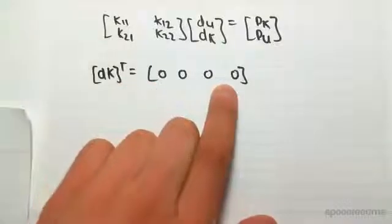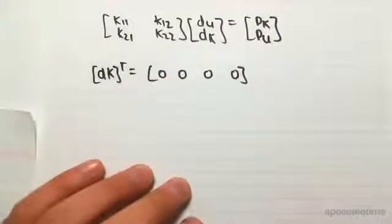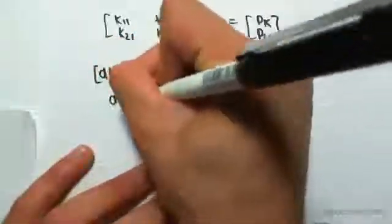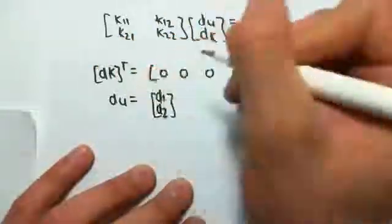So D known is 0, 0, 0, 0. D unknown, we don't know what that is yet. We're just going to call that D1 and D2. So normally we'd write it as D1 and D2, something like that.